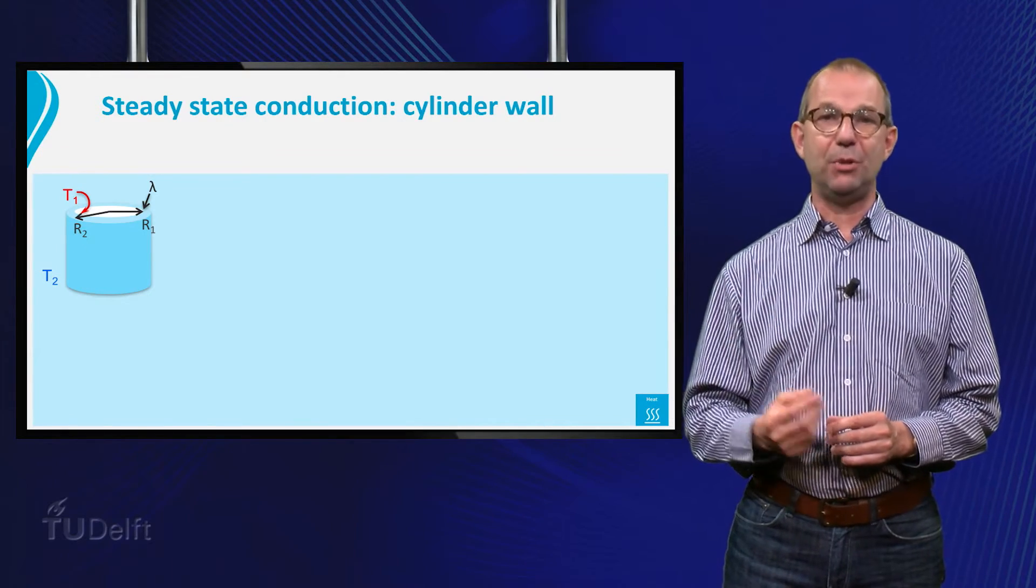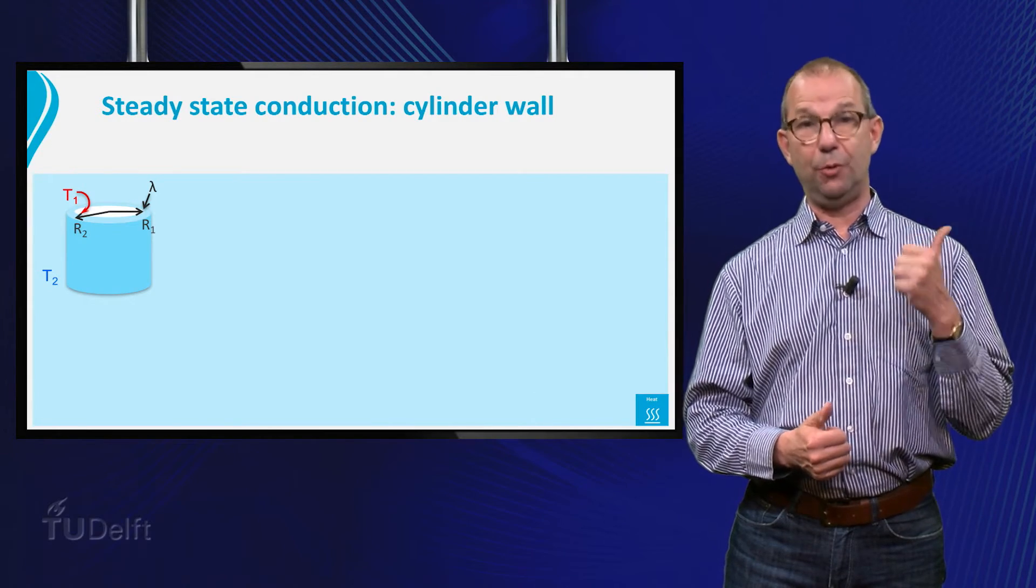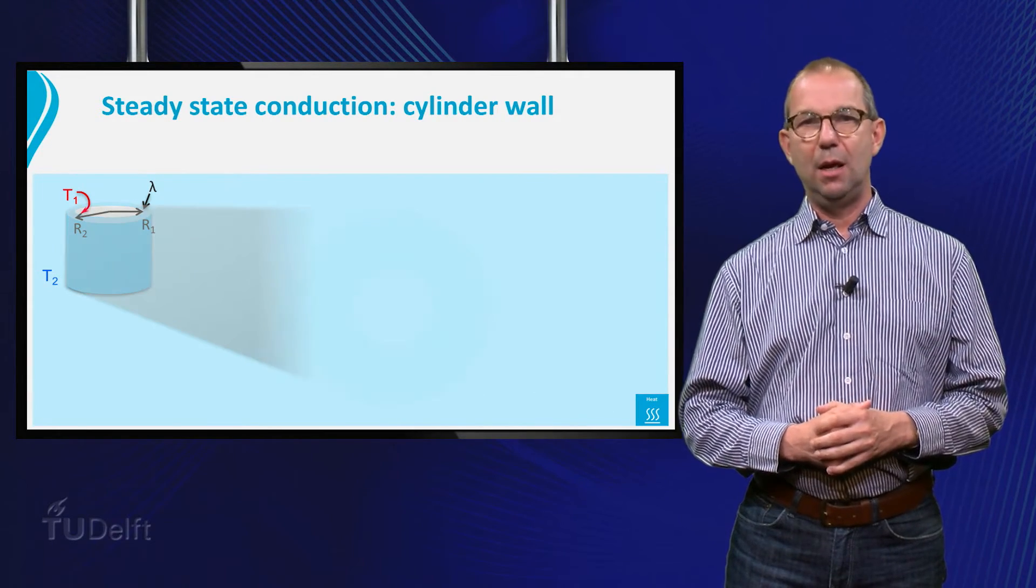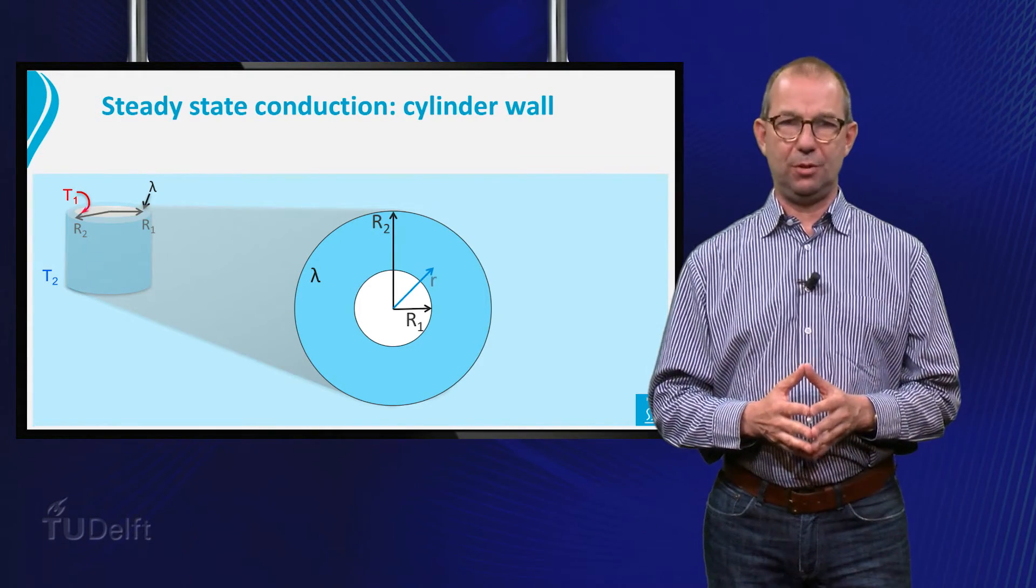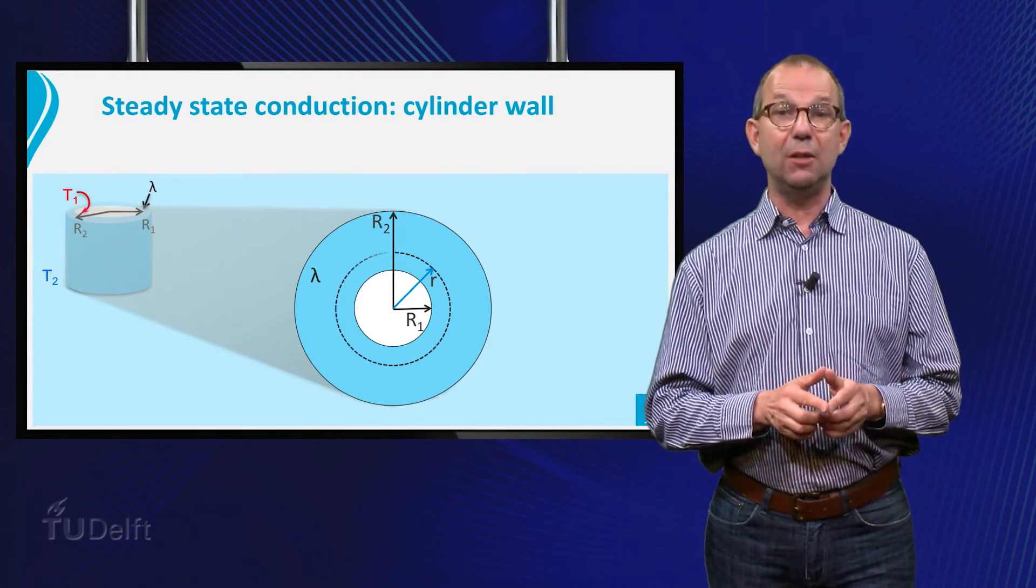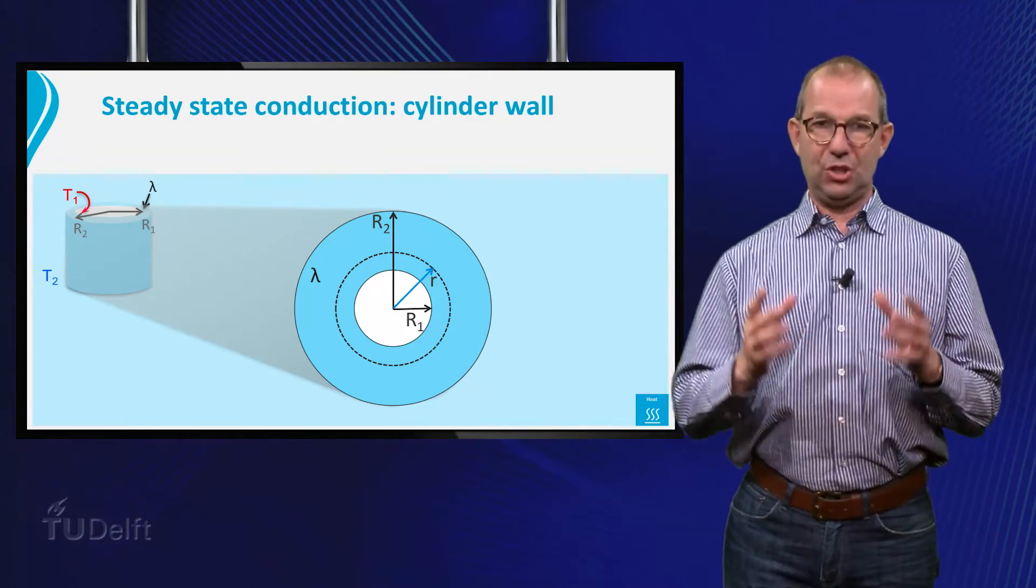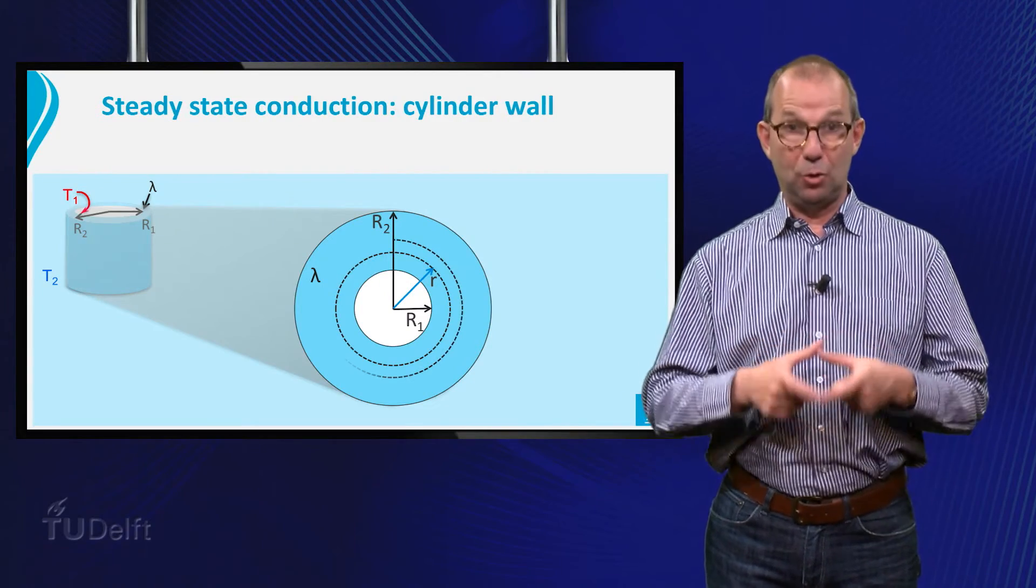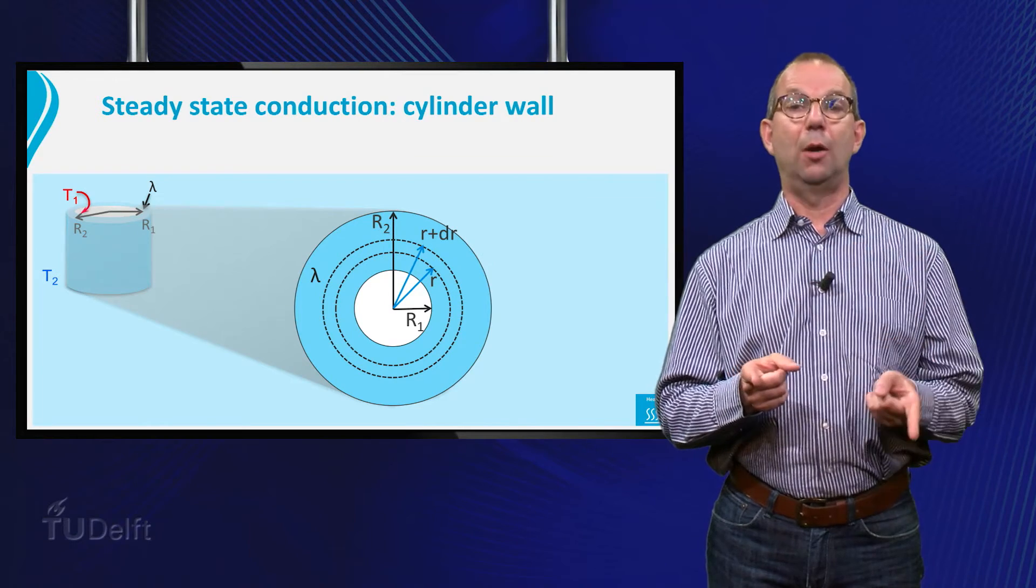In this case, the temperature will decrease with increasing distance from the center of the cylinder. If we take a cross-sectional view, we expect that the temperature decreases with increasing radial distance r. Thus, in analogy with the strip, we take as the control volume a ring in the cylinder wall between r and r plus dr.